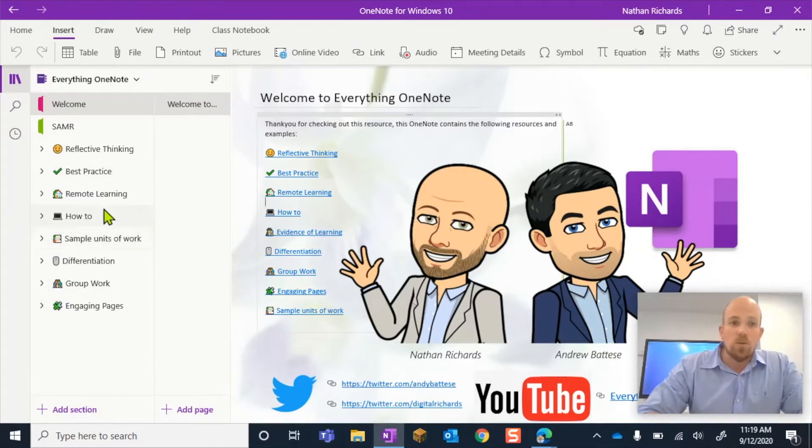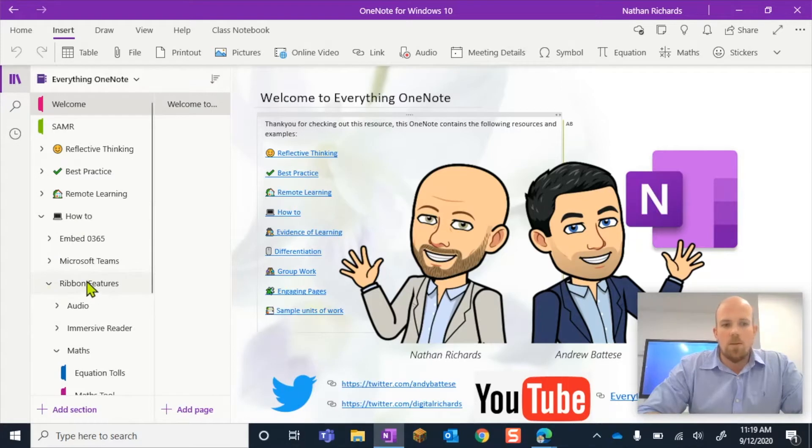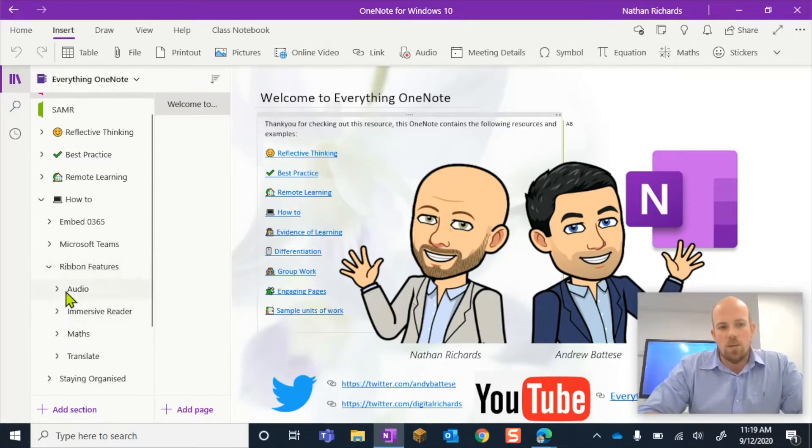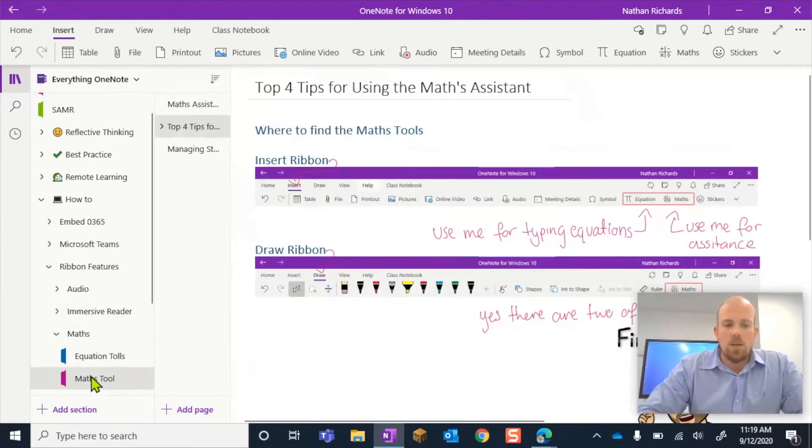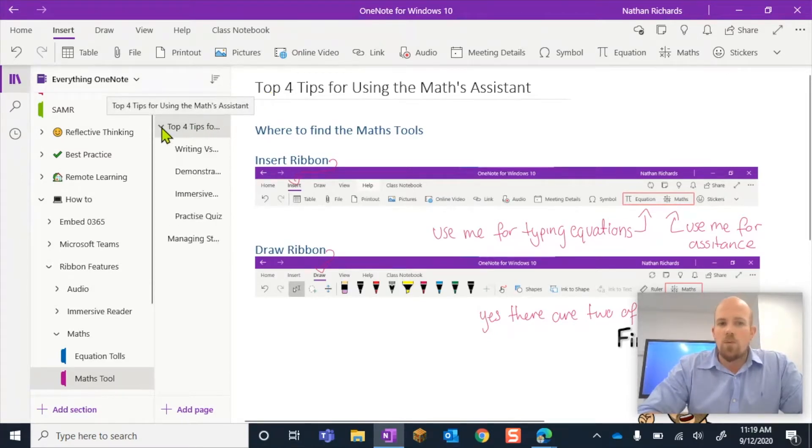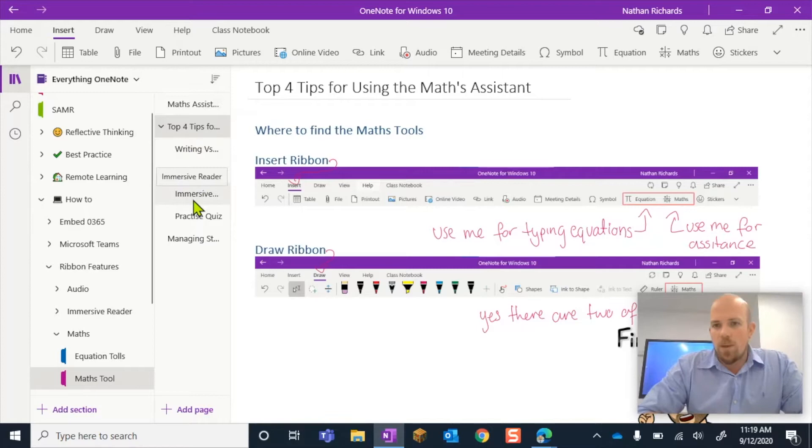And so where we're going to look to find this is if we click on the how-to section and then here in the ribbon section, you'll see these drop-down menus and we're going to specifically refer to the maths one and then to the maths assistance section here. Okay, so here we are and we're looking for this top four tips for using the maths assistant.